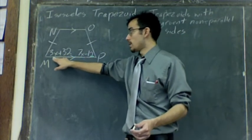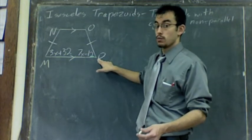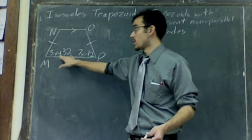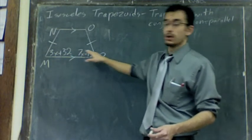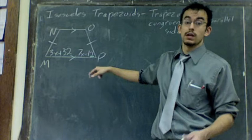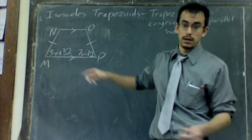So in this case, M and P are congruent, which means they're equal to each other. You're going to set this equal to this. So let's say 3X plus 32 equals 7X minus 12. Solve for X and plug it back in.